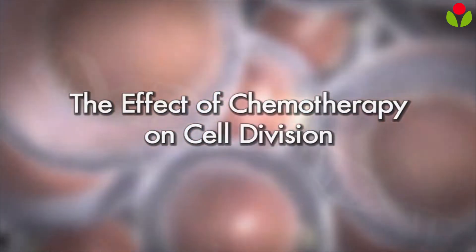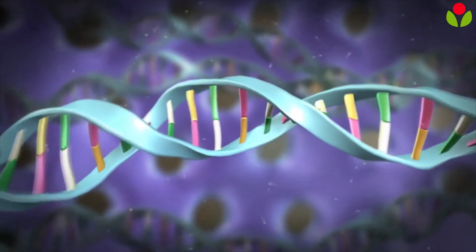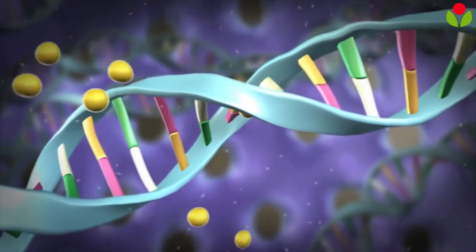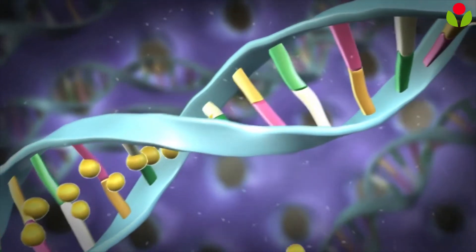In normal cells there are checkpoints at every stage of this process to make sure that cells grow and divide in a regulated way. In cancer cells these checkpoints are broken and cancer cells grow out of control.